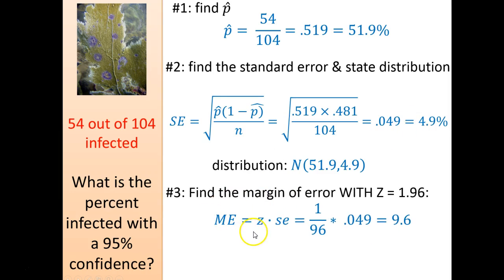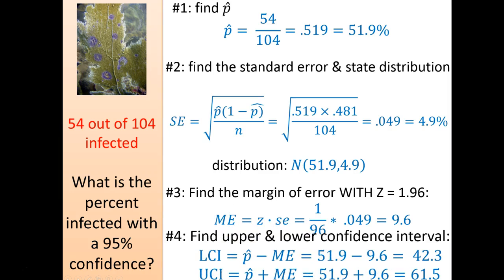Then I find the margin of error, which is Z times the standard error. So my Z here, that is a typo, it should be 1.96 times 0.049. So this should be 1.96 from Z, and the 0.049 comes from here.